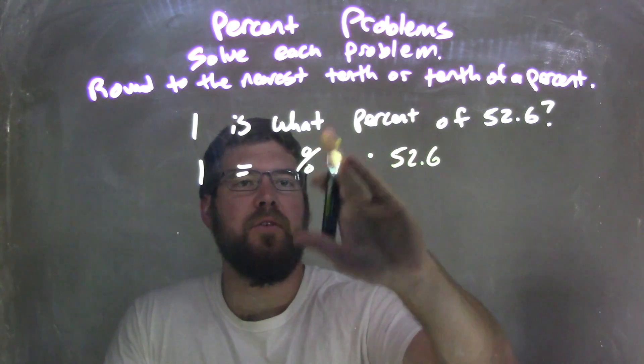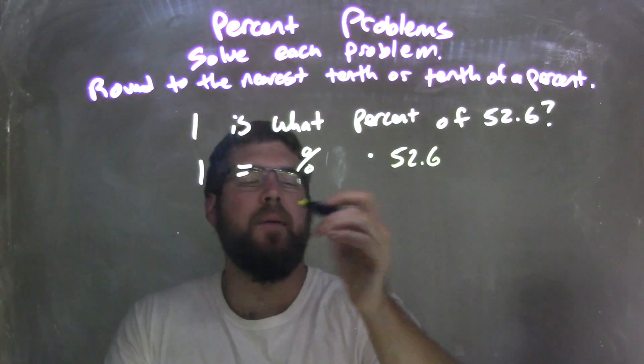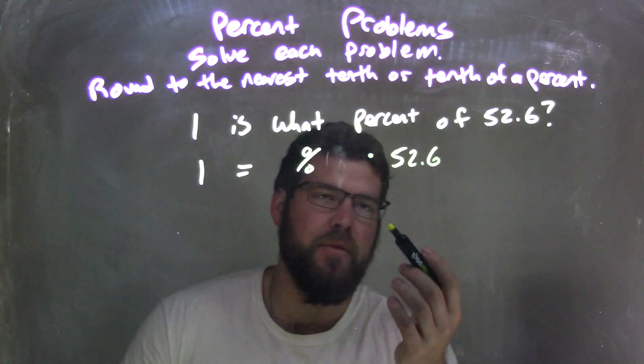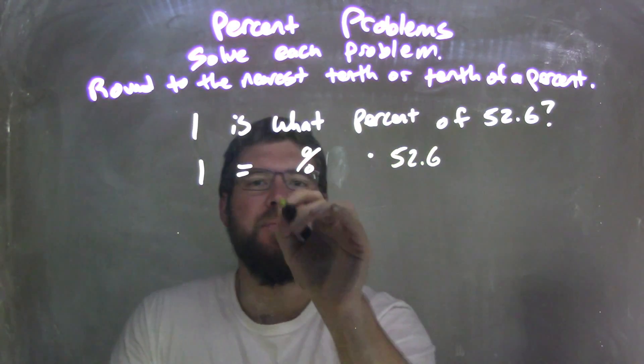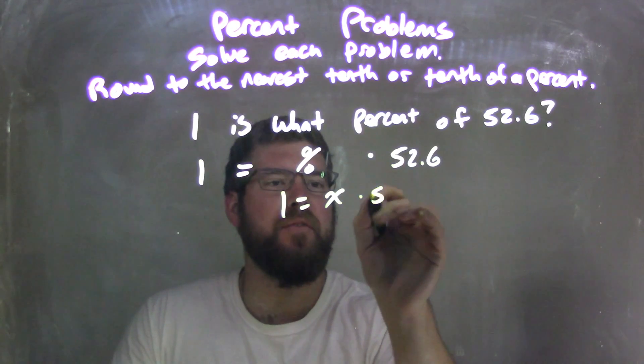We want to get the percent. So 1 equals the percent times 52.6. Let's make that percent a variable, so 1 equals x times 52.6.